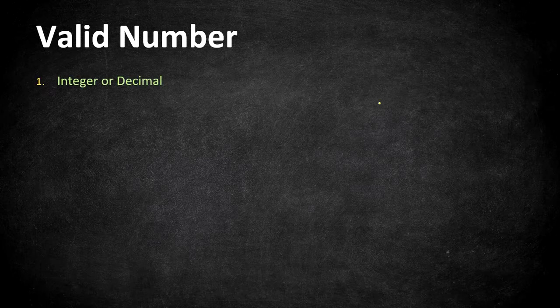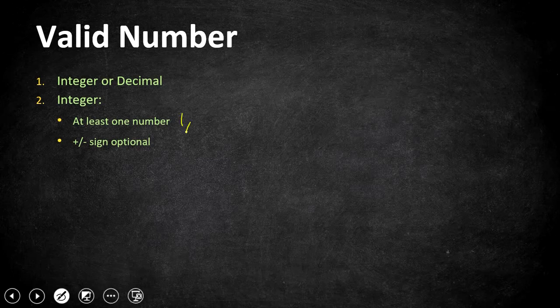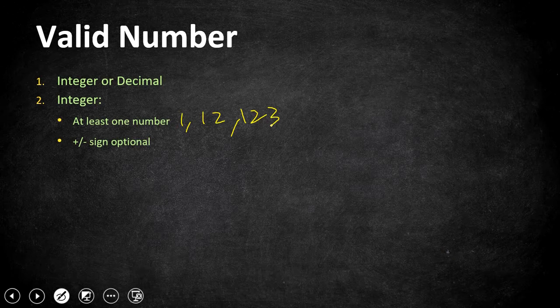Let's go through the conditions one by one. The first rule is that a valid number can be an integer or decimal. Starting with integer, it should have at least one digit — it can be one, two, three, or any number of digits — and a plus or minus sign is optional.